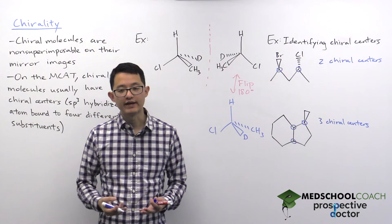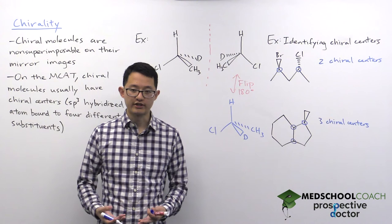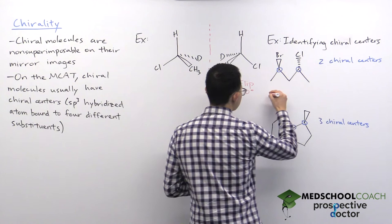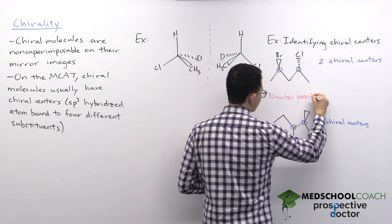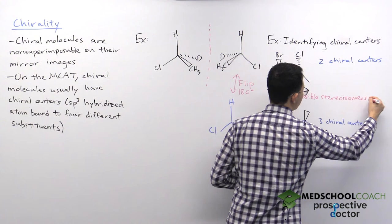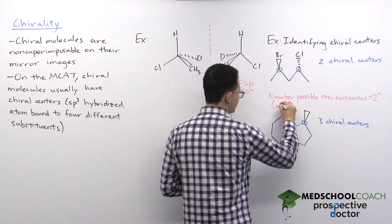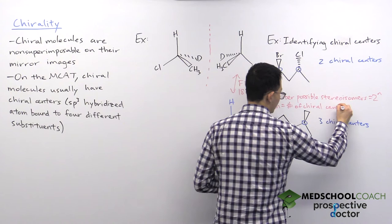Now identifying chiral centers is important because it can help you answer another type of MCAT question: how many possible stereoisomers are there for this molecule? There is an equation for this. The number of possible stereoisomers is equal to 2 to the power of n, where n is the number of chiral centers.